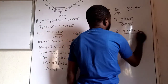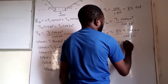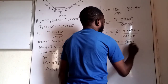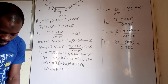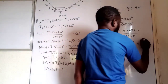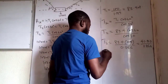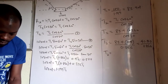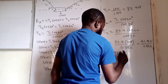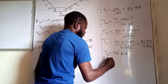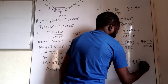T2 equals 83.4 times cos 60 divided by cos 30, which is 83.4 times 0.5 divided by 0.866. So 83.4 times 0.5 gives 41.7, divided by 0.866 gives T2 equals 48.2 newtons. Hence T1 is 83.4 newtons and T2 is 48.2 newtons.